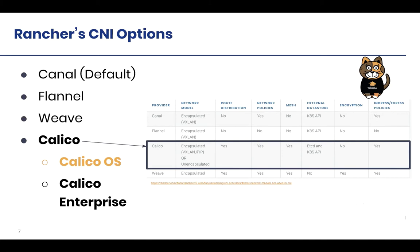One thing I wanted to highlight: both Calico open source as well as Calico Enterprise are supported solutions that can run on Rancher. When you pick Calico as an option in your cluster configuration file, you'll get Calico open source. But today we'll talk about how you can enable Calico Enterprise, why you would need that, and how to do so.